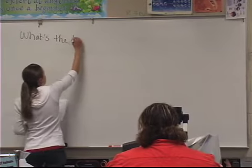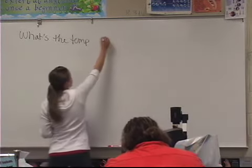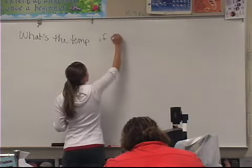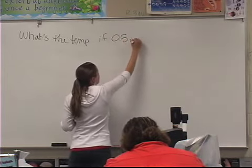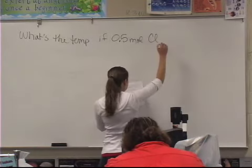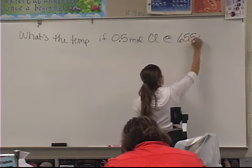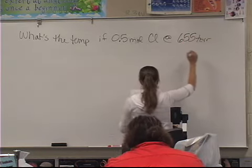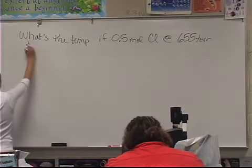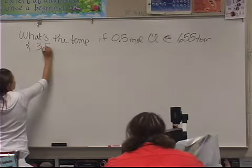So what's the temp if you have 0.5 moles of chlorine at 655 torr and 3.5 liters?